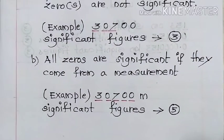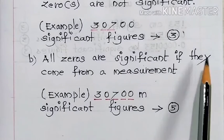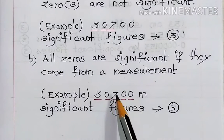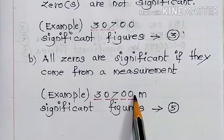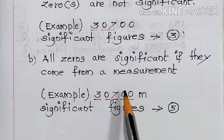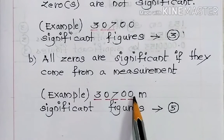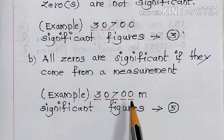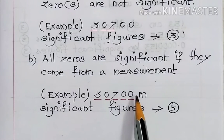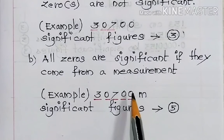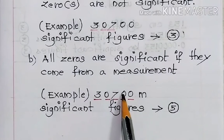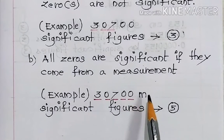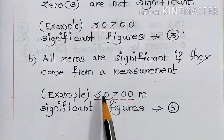All zeros are significant if they come from a measurement. Taking the same number 30700, in the first case with a decimal point the two zeros were significant; in the second case without a decimal point they were not. But in this case, we have a unit such as meter. When zeros after non-zero digits appear with a unit, they are taken as significant. So the significant figures here is five: one, two, three, four, five.